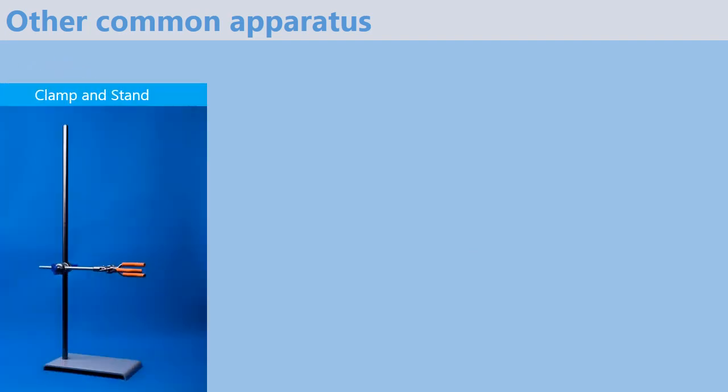Next we have a clamp and stand from this diagram. This one here is the clamp and this is the stand. These two are used for holding and supporting apparatus during experiments.